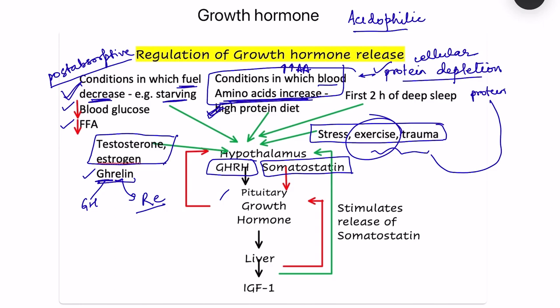Growth hormone is also released during the first two hours of deep sleep, that is NREM sleep — which is why the saying goes that children grow during sleep, specifically deep sleep. In contrast, REM sleep actually inhibits the release of growth hormone.